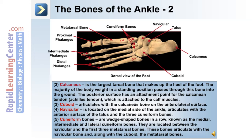The third bone is the cuboid, which articulates with the calcaneus bone on the anterior lateral surface. The fourth tarsal bone is the navicular bone, located on the medial side of the ankle, which articulates with the anterior surface of the talus and the three cuneiform bones. Number five are the cuneiform bones — wedge-shaped bones in a row known as medial, intermediate, and lateral cuneiform bones. They are located between the navicular and the first three metatarsal bones, and articulate with the navicular bone and, along with the cuboid, the metatarsal bones.